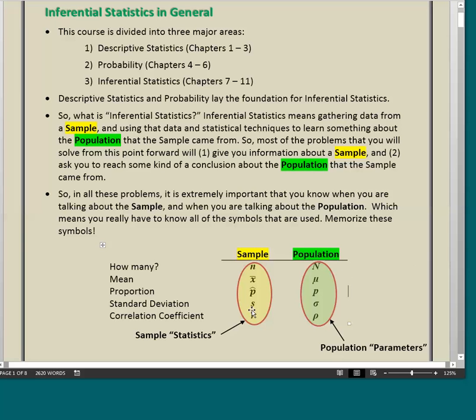I have one column here for samples and another column for populations. The question of how many are in a sample, the symbol for that number is this little n, lowercase n. How many are in a population is the uppercase N. You will use this lowercase n all the time.